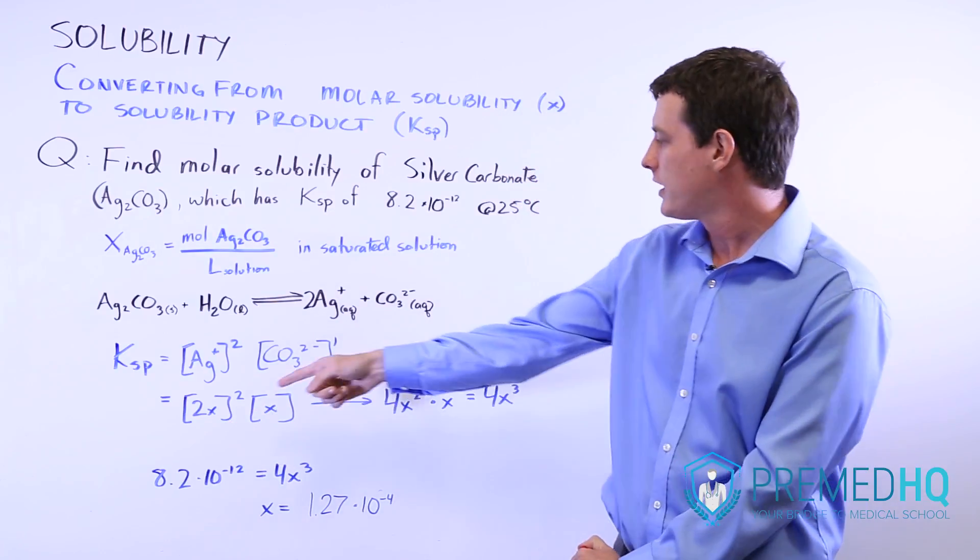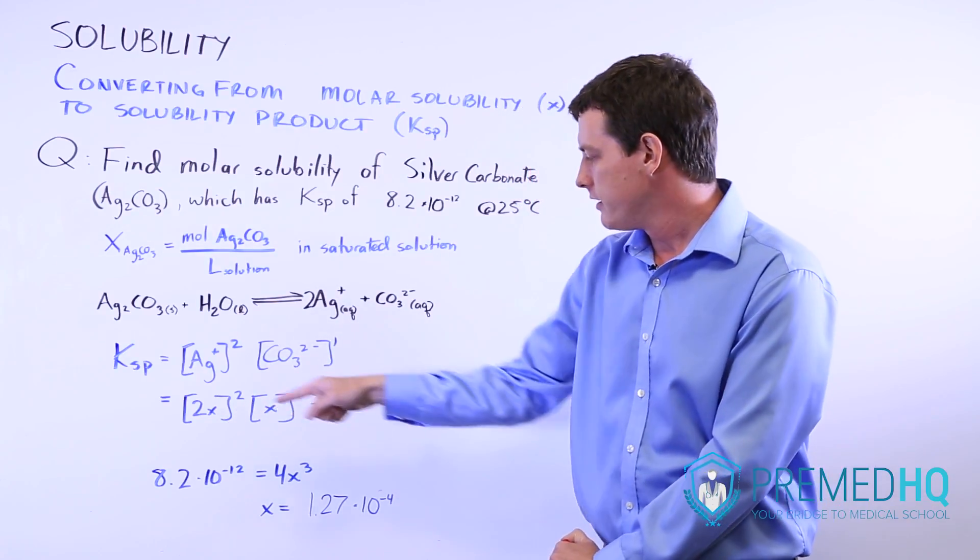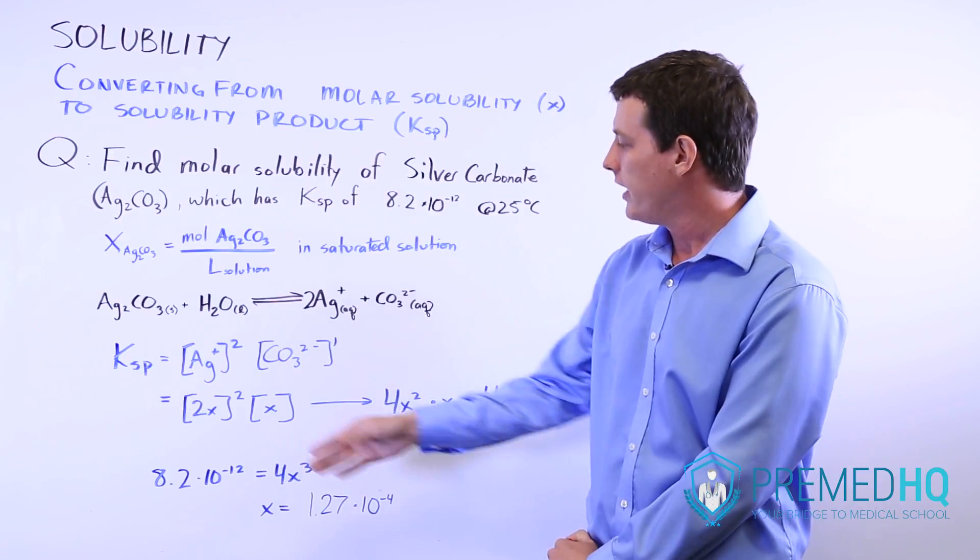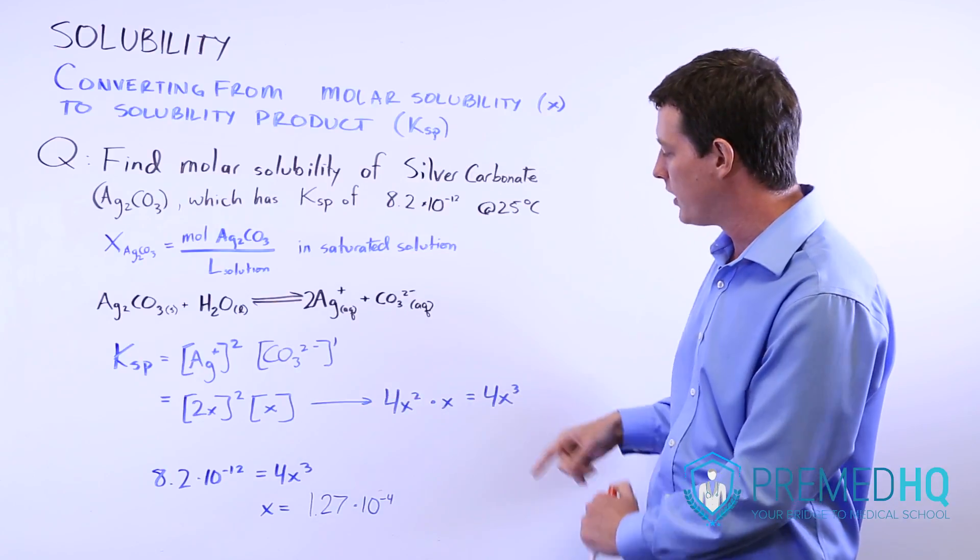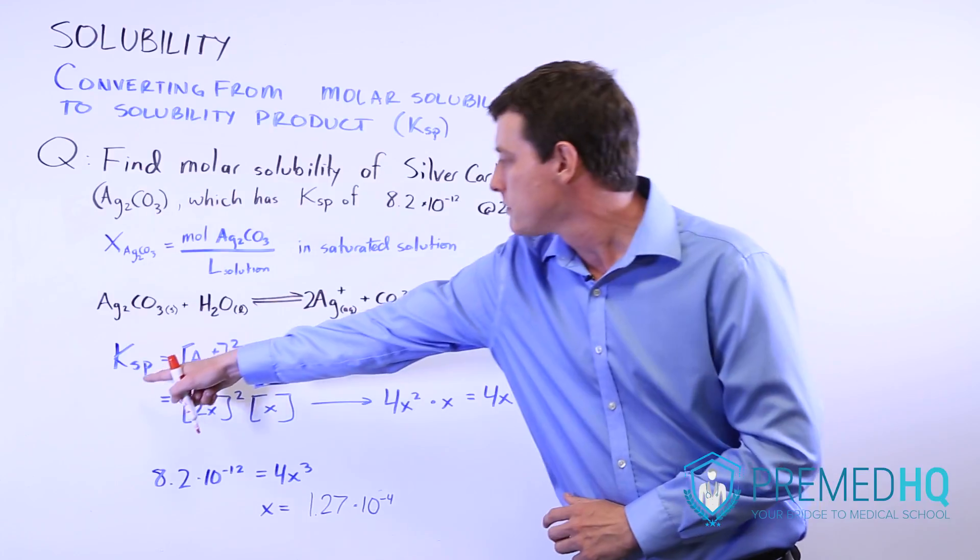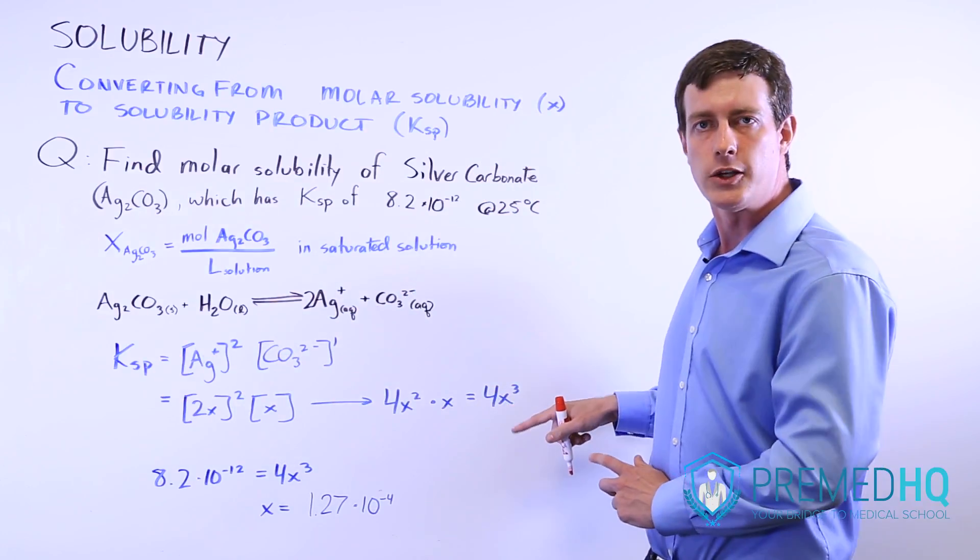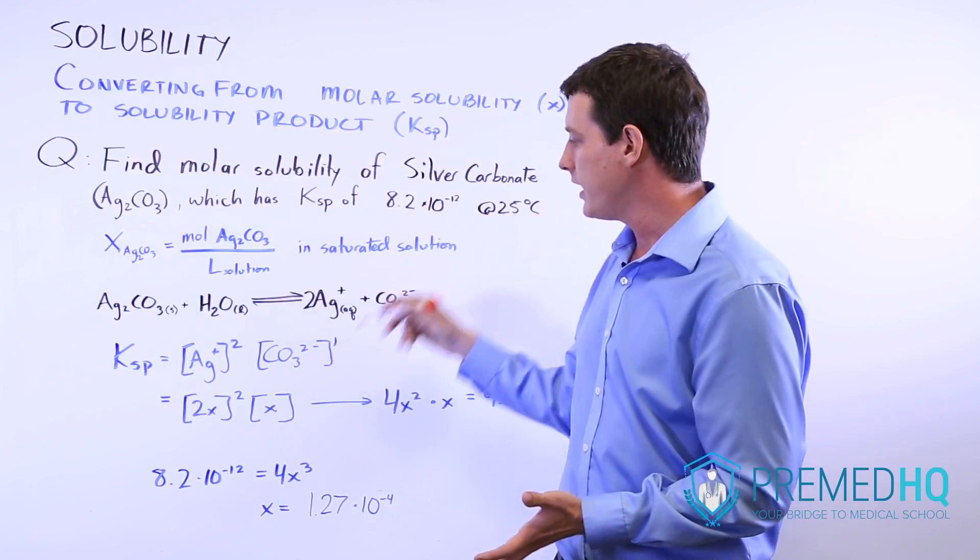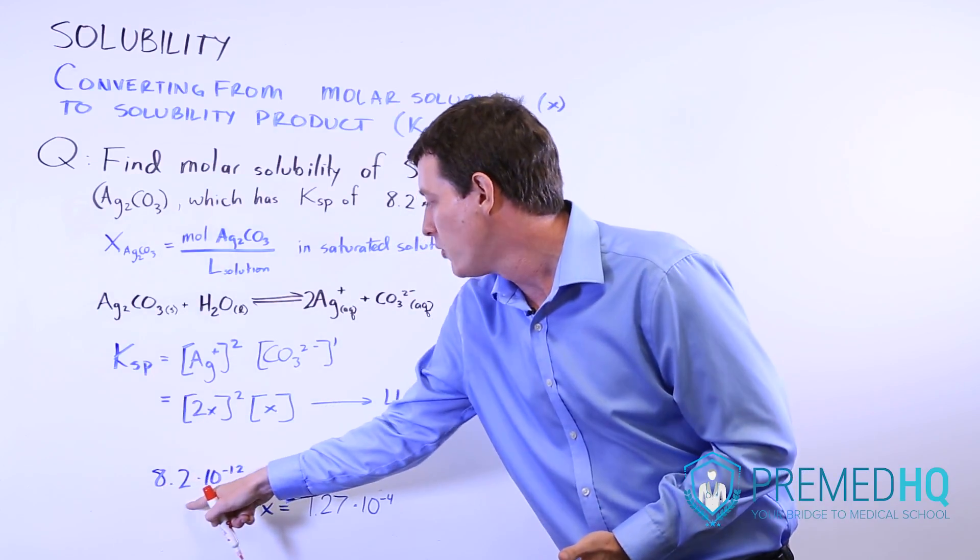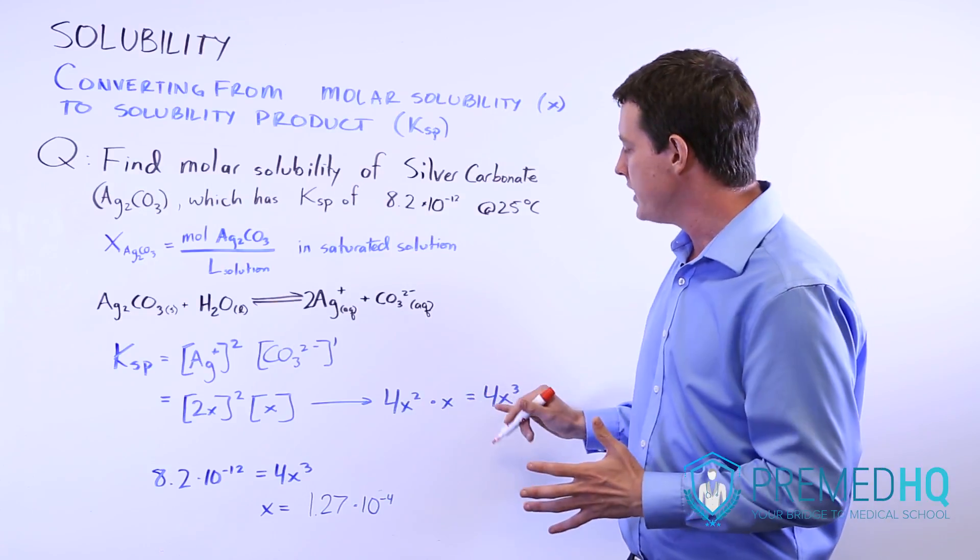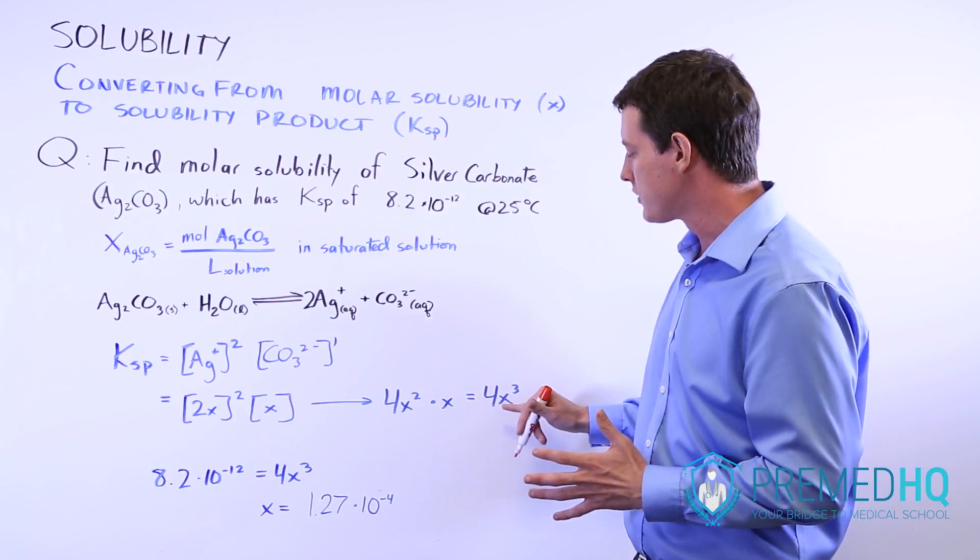When we solve for that (2X)^2, that number will be 4 times X^2, and then we'll just multiply that by the X here, and what we'll end up with is 4X^3. So you can say KSP = 4X^3. Then all that we need to do is just plug in the known KSP value, which is 8.2 × 10^-12, and we know that that's equal to 4 times the molar solubility cubed.